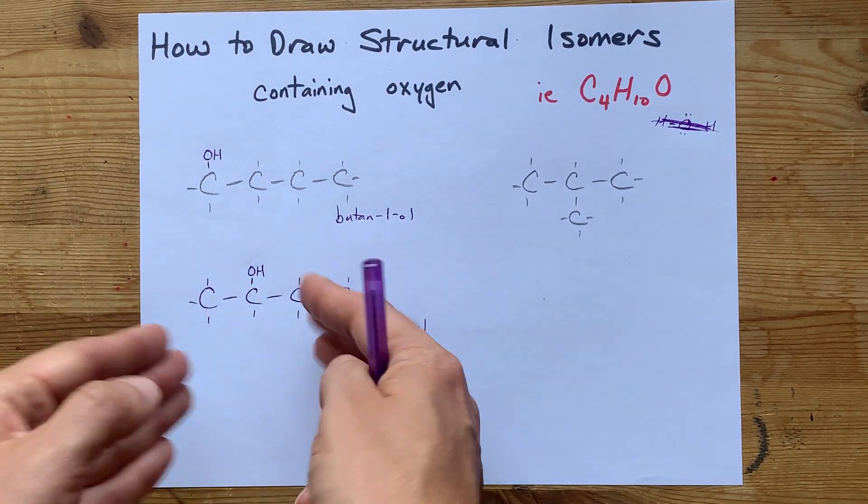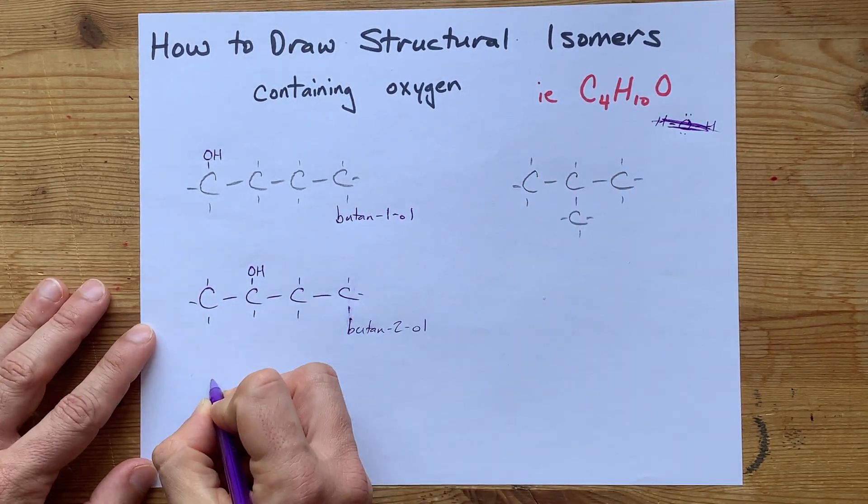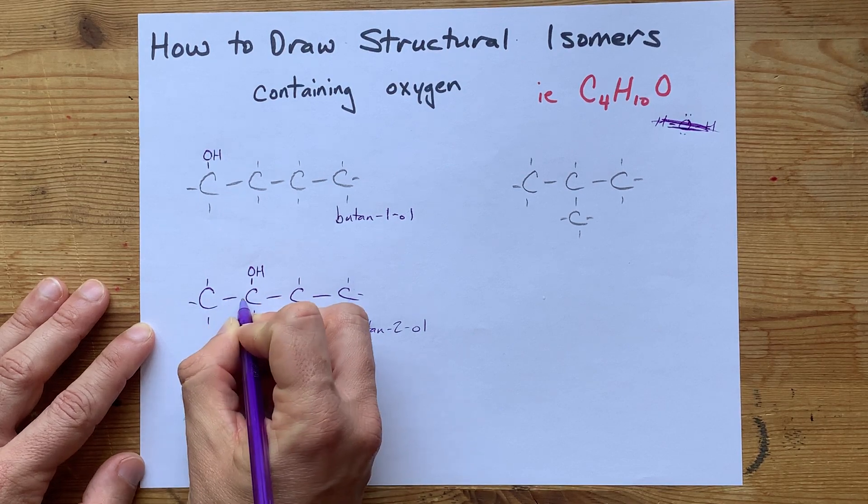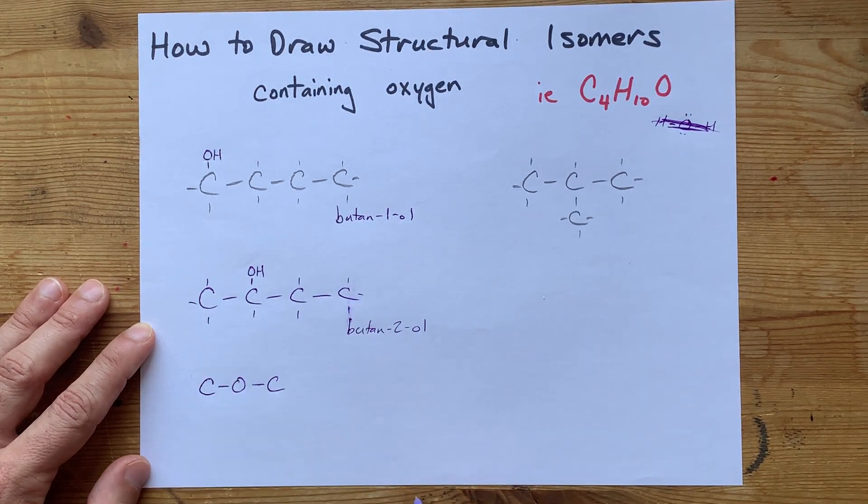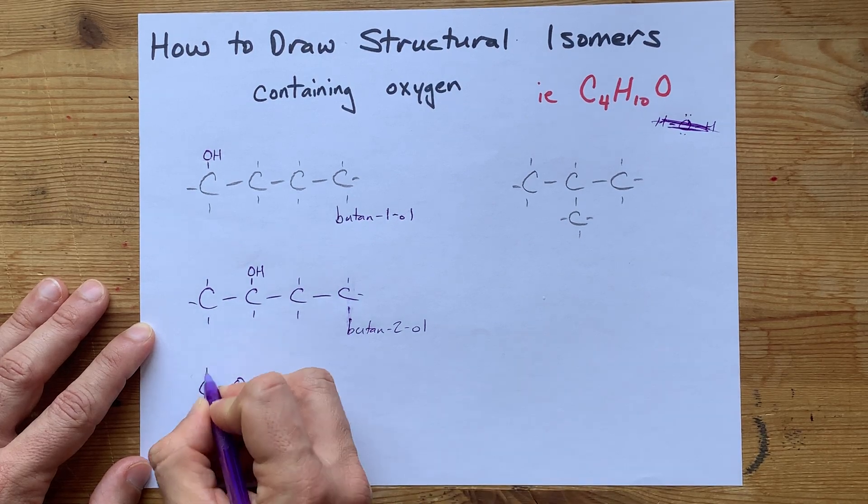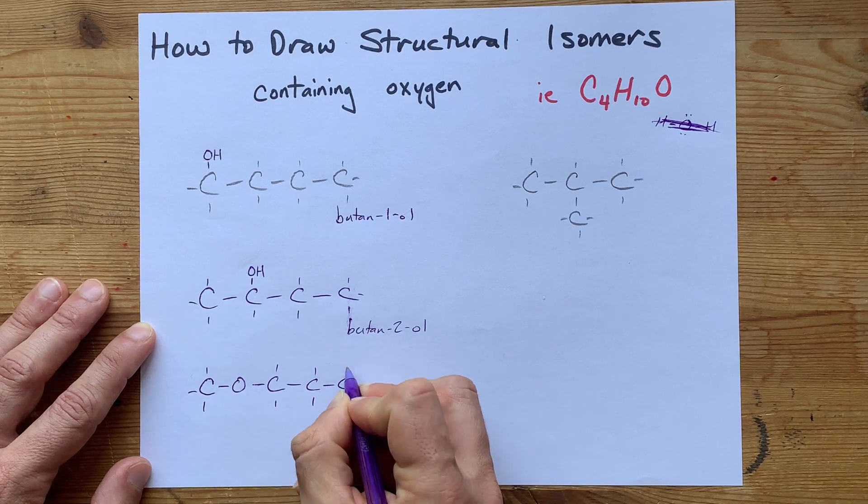You can also insert oxygen between two carbons. I'm going to take the first single bond between this carbon and this carbon here. I'm going to insert the O in between. Now counting: 1, 2, 3, 4 carbons and 5, 6, 7, 8, 9, 10 hydrogens.